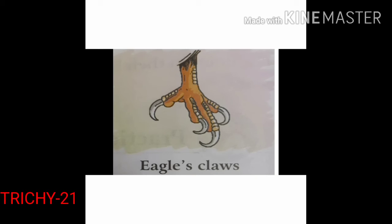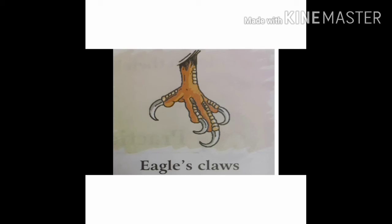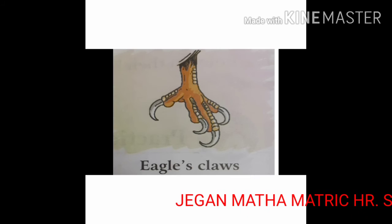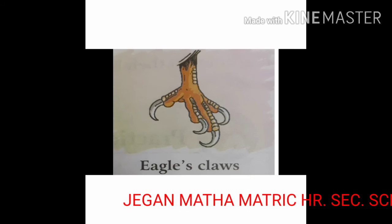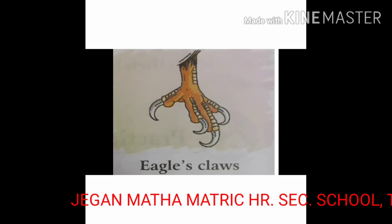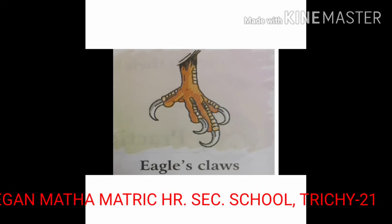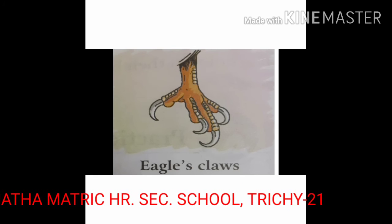Next, we are going to learn about eagle's claws. Birds of prey like eagle and owl have strong feet and hooked claws so that they can hold the animals on which they feed tightly. Birds of prey are also called predatory birds or raptors. For example, vulture, kite, eagle and hawk.